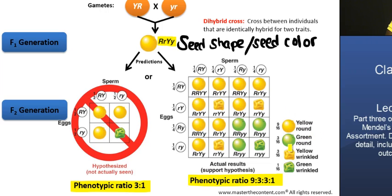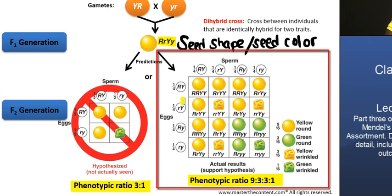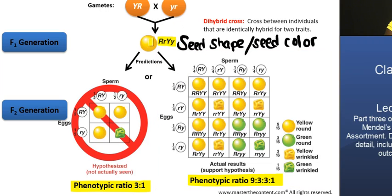That is a ratio in which he observed those four different phenotypes. The alternative hypothesis — which is actually the correct one — is that the two pairs of alleles in the F1 generation segregate independently of each other during the formation of gametes. In other words, the genes are packed into gametes in all possible allelic combinations, as long as each gamete has one allele for each character — one allele for seed color and one allele for seed shape.